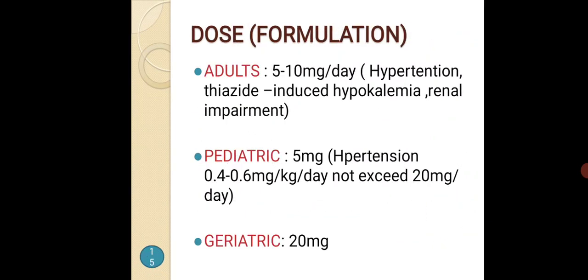Dose: In adults with hypertension, thiazide-induced hypokalemia, or renal impairment, the dose is 5 to 10 mg per day. For normal adults it is 5 mg per day. For pediatric hypertensive patients the dose is 0.4 to 0.6 mg per kg per day and should not exceed 20 mg per day. For normal pediatric patients it is 5 mg. For geriatric patients it is 20 mg.